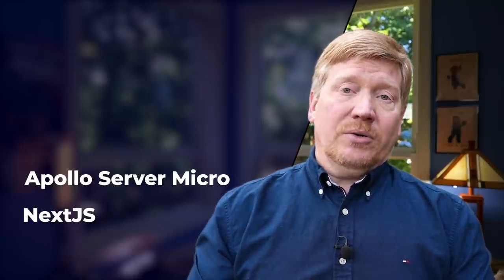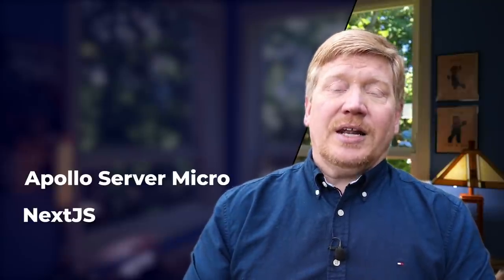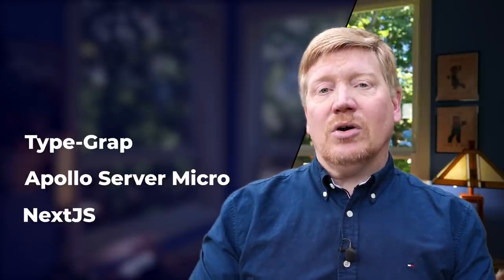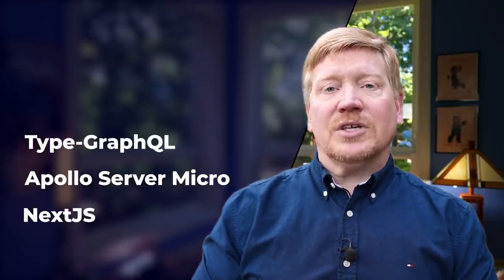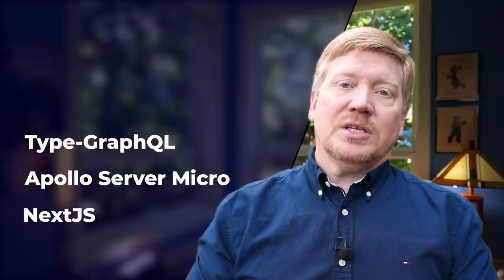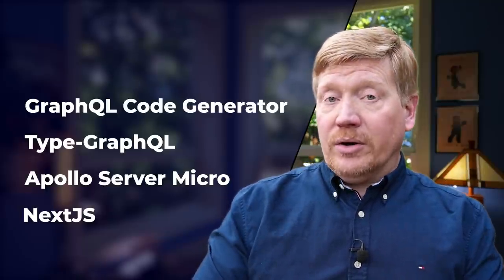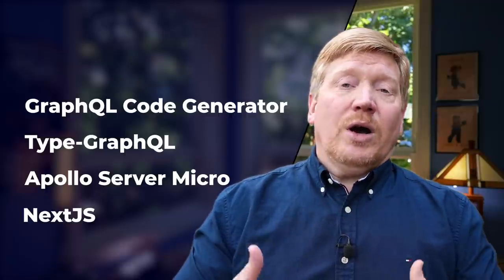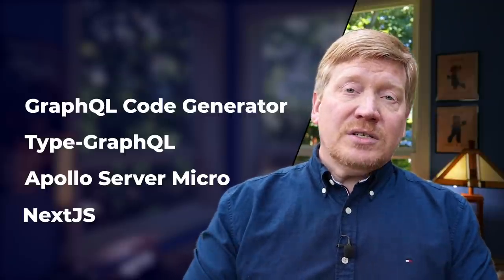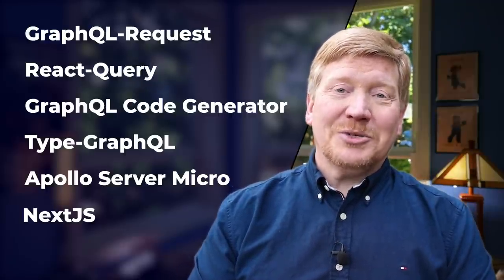We're going to build out a Next.js server and then build an endpoint into that using Apollo Server Micro. On top of that, we are going to define the schema — the data types and the resolvers — using a library called TypeGraphQL that allows us to define that schema using TypeScript classes. Then we're going to use the GraphQL code generator to build out GraphQL request functions that we will send to the server using React Query.